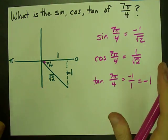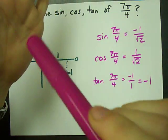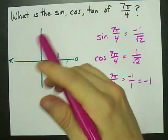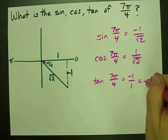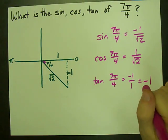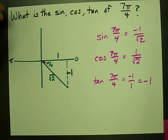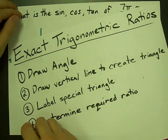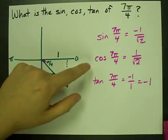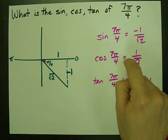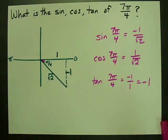If you took on your calculator tan of 7π over 4 and you were in radian mode, you would get negative 1 out. That's how you calculate the exact trigonometric ratios for angles in radians. It's that quick. If you're not that quick, practice more. Best of luck.